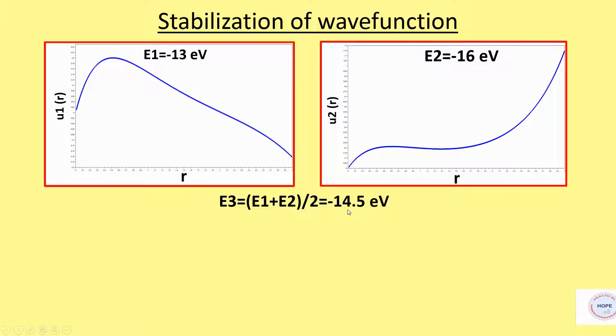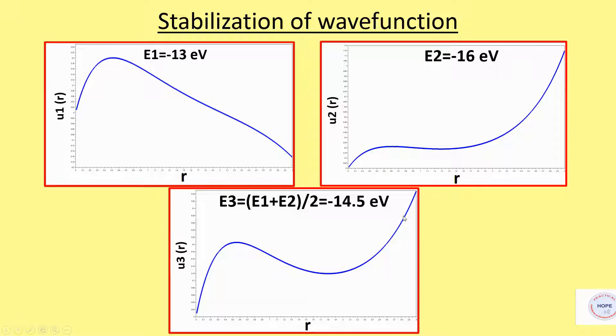Again, we have to take the average. Now E3 will be minus 14.5 electron volts, at which solution is approaching plus infinity. So now E2 should be replaced by new value of E3. This we are going to do a number of times.